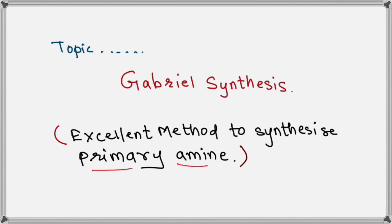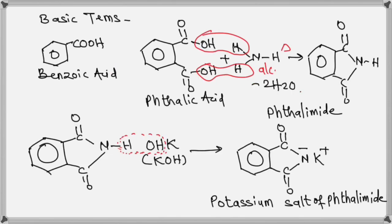Let us discuss some basic points. When benzene is attached with the COOH group, it's called benzoic acid. If it has two COOH groups, that is called phthalic acid.